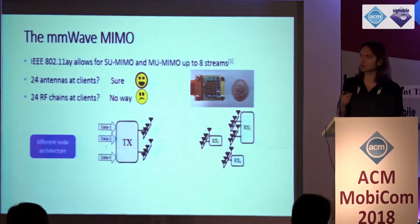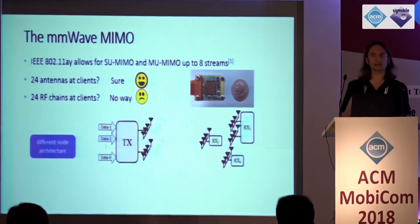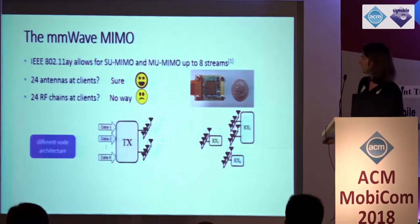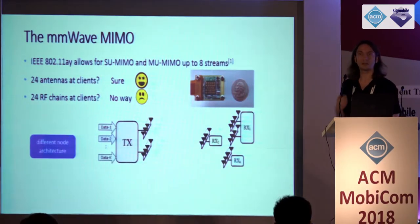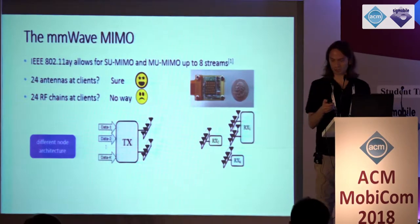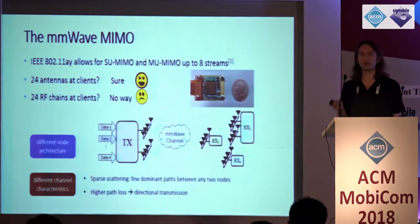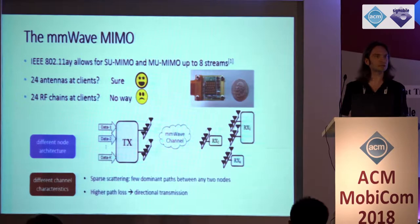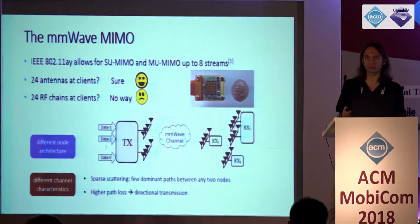What you end up doing is having one RF chain connected to one phase array, with K RF chains each connected to a different phase array. In addition to the different architecture, you have different channels: we have a few dominant paths only — a sparse channel — and high path loss, which means we need analog beam steering to achieve communication.